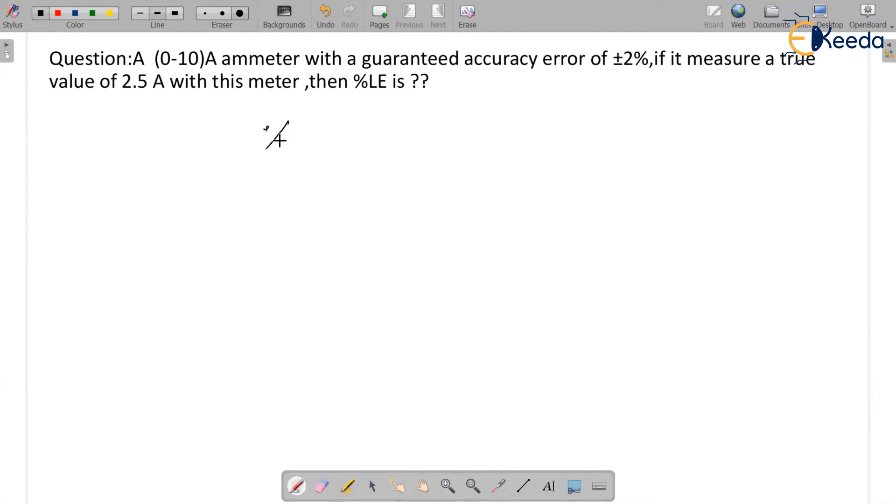Percentage guaranteed accuracy error is equal to error with respect to FSD value into 100. This is a known formula for us and this itself is your limiting error.